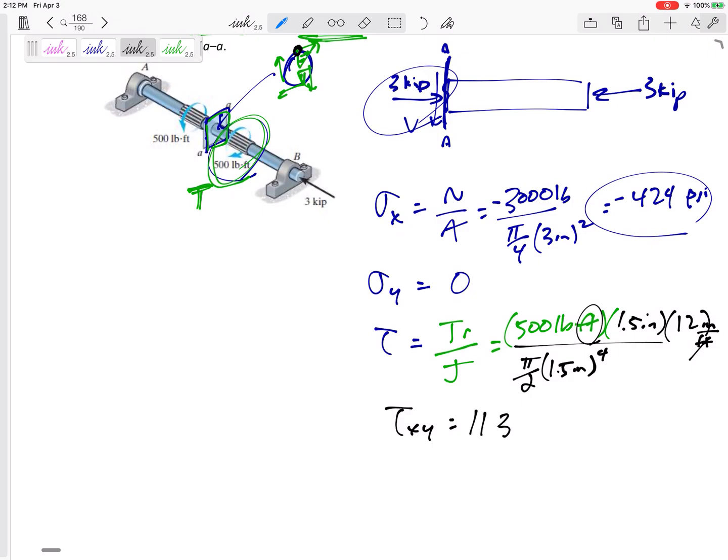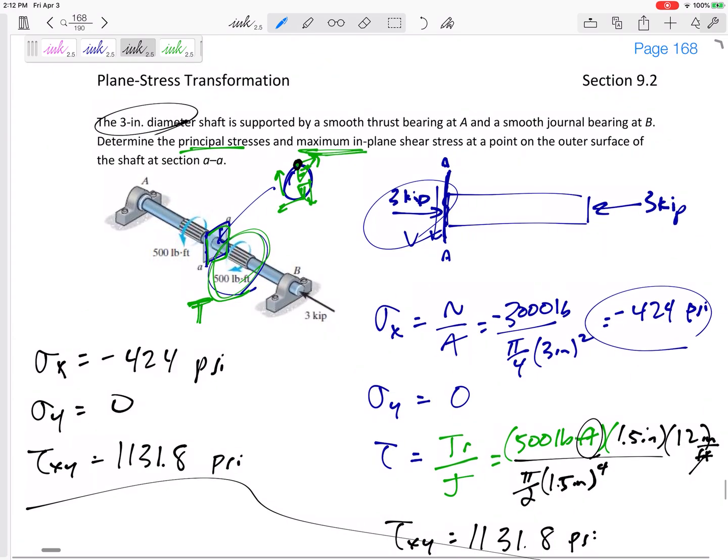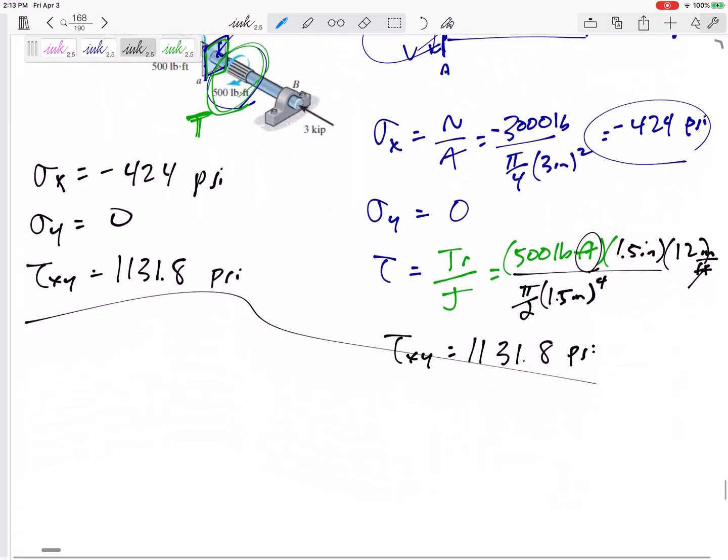So let me just reiterate here. This is what we've got. We've got a Sigma X of negative 424 psi, Sigma Y of 0, tau XY of 1131.8. That was the hard part. Now we're just plugging into our equations to find principal stresses and maximum shear stress. Did it ask for the orientation theta P or theta S? No. Did it ask for me to draw it? No.